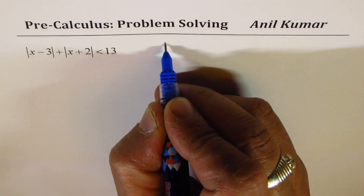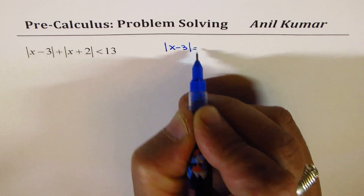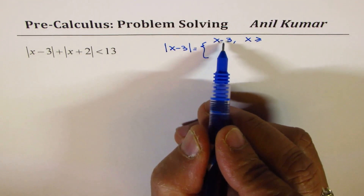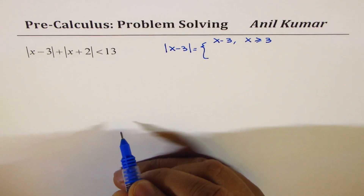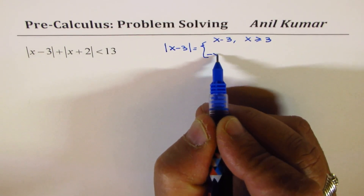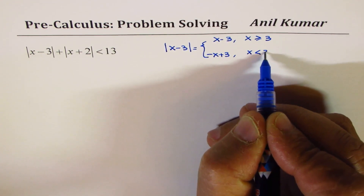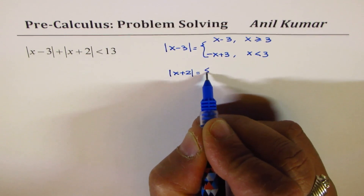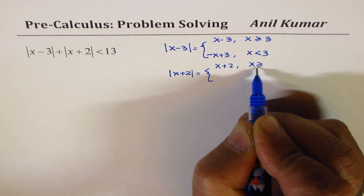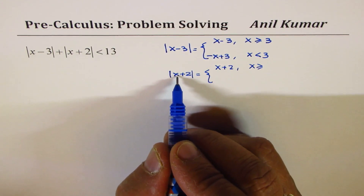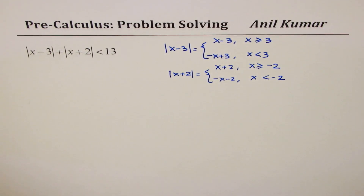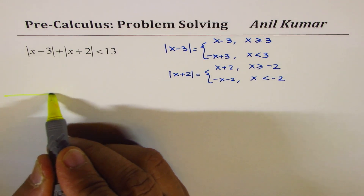The first step is to understand what |x − 3| equals as a piecewise function. It equals x − 3 when x is greater than or equal to 3 (since x = 3 makes it zero), and it equals −(x − 3) = −x + 3 when x is less than 3. Similarly, |x + 2| equals x + 2 when x is greater than or equal to −2, and −(x + 2) when x is less than −2. This tells us we must solve the inequality on different intervals.